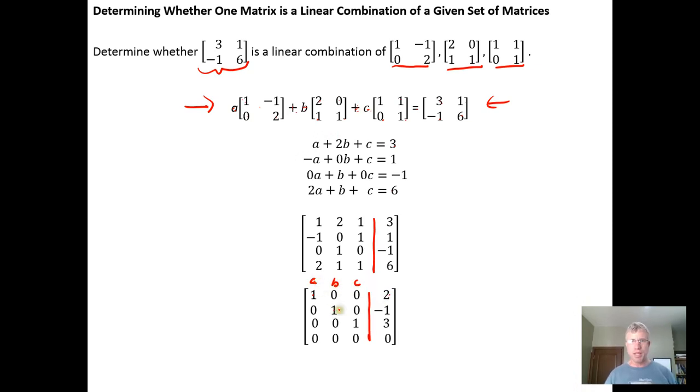B equals negative 1, and C equals 3. So we get scalars A equal to 2, B equal to negative 1, and C equals 3. That tells us that we could write this matrix as a linear combination of these three matrices.